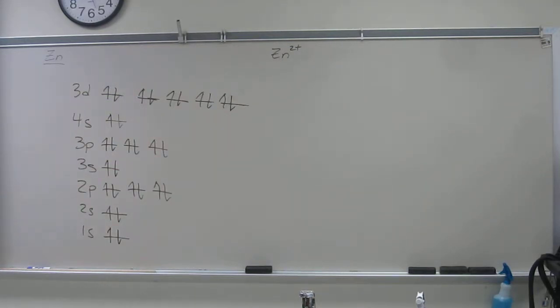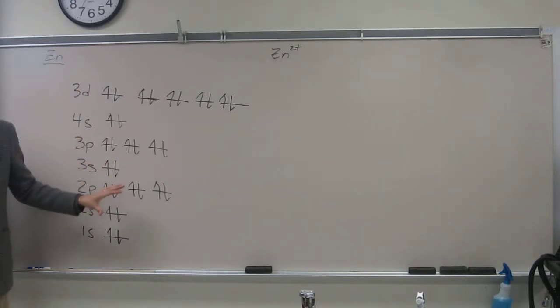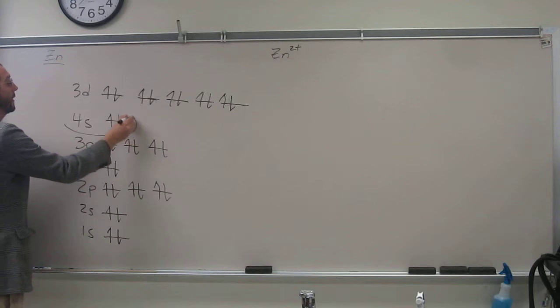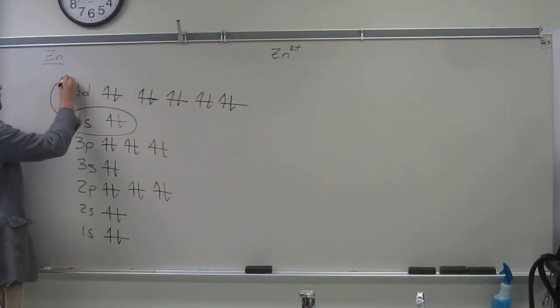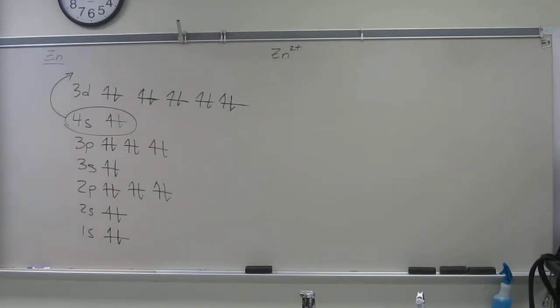Because once the 3D orbitals, like we're saying, are filled up, they actually become inner electrons. So once all this is filled up, the 4S orbital actually becomes higher in energy than the 3D orbitals.